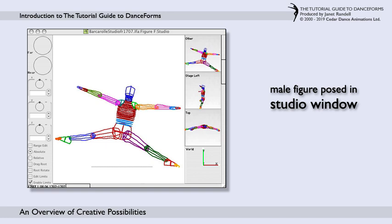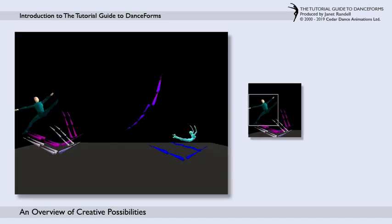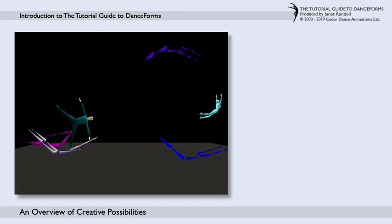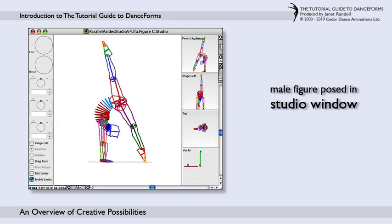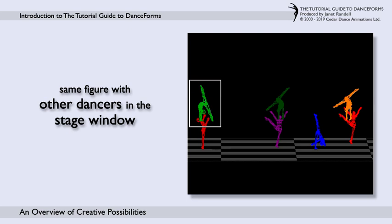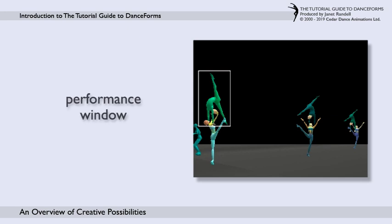Here are some more examples of dance moves showing a male figure posed in the studio window, then viewed in green with other dancers on the virtual stage, coming to life jumping sideways in the performance window. Here is a different male figure posed in the studio window, shown in partner work in the stage window together with other couples. This is the same pose held in the performance window, progressing into an animated sequence.